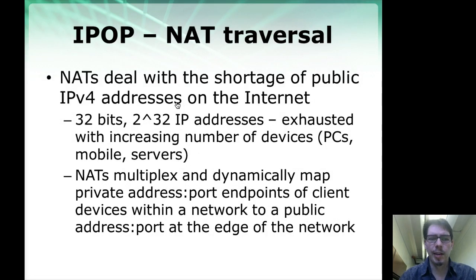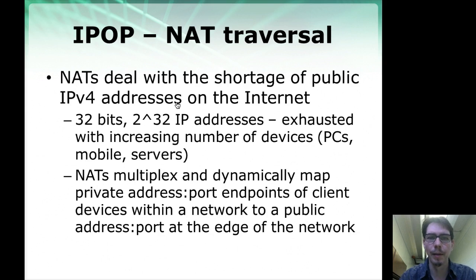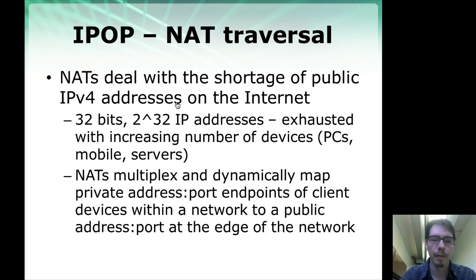NAT traversal is necessary because IPv4 addresses are running short on the internet. There are 32 bits used to name an IPv4 endpoint, giving about 4 billion numbers. Some are unavailable due to fragmentation, and with the increasing number of devices connected to the internet, it's not possible to name all of them with a unique IP address. One approach to sidestep this problem before IPv6 is available is to use network address translators.